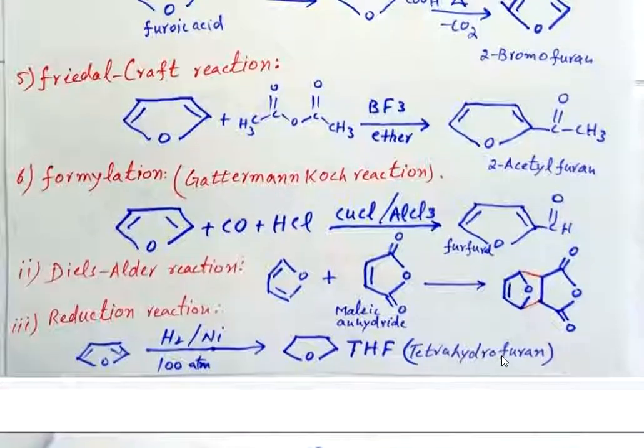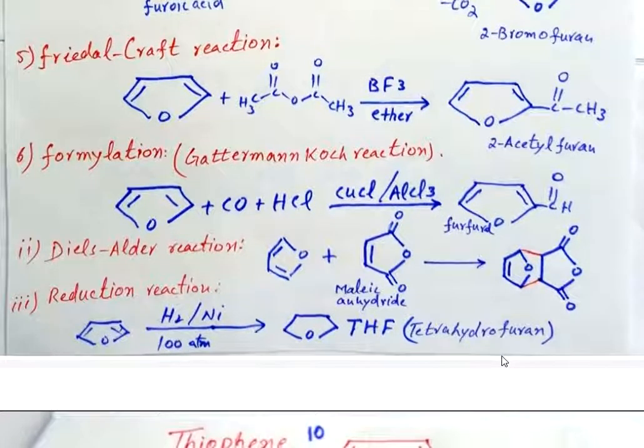The next reaction is formylation. For formylation, we use the Gattermann-Koch pathway. Carbon monoxide CO is first treated with hydrochloric acid HCl, and as a result, formyl chloride will be obtained. Formyl chloride is then treated with furan in the presence of Lewis acid catalysts like copper chloride CuCl or aluminum chloride AlCl3, and the product will be furfural where the aldehyde CHO group is substituted at position 2.